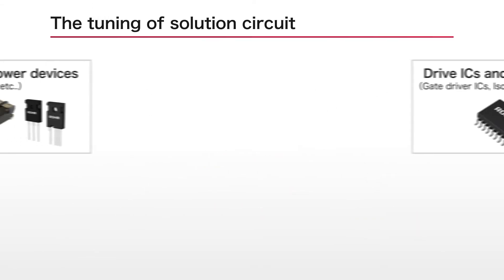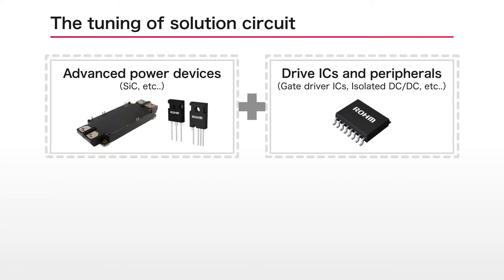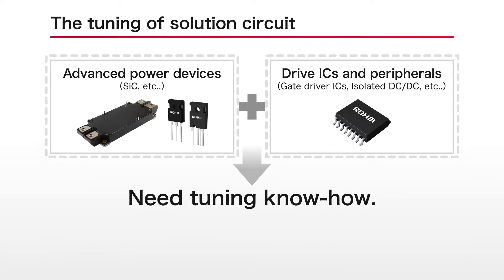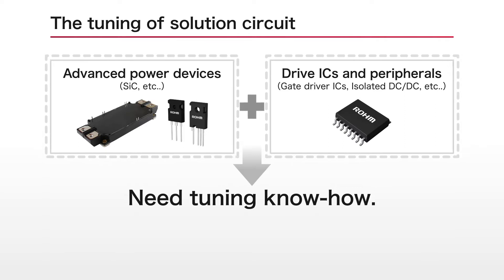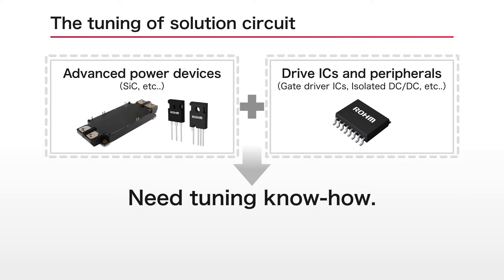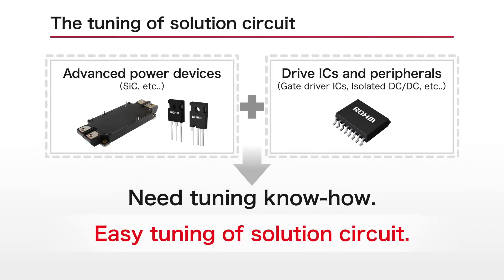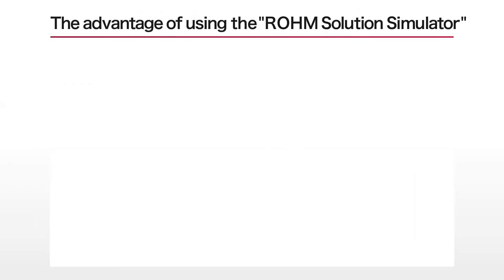Roam has been focusing on the power electronics field in recent years. One of the development challenges is that even after the circuit topology and specifications have been determined, unexpected problems tend to occur during subsequent processes. In particular, in order to maximize the performance of cutting-edge power devices such as silicon carbide, tuning with gate driver IC, its peripheral components, and sometimes even the board characteristics is an important part of the development. The Roam Solution Simulator enables you to derive optimal circuit parameters as you tune it.